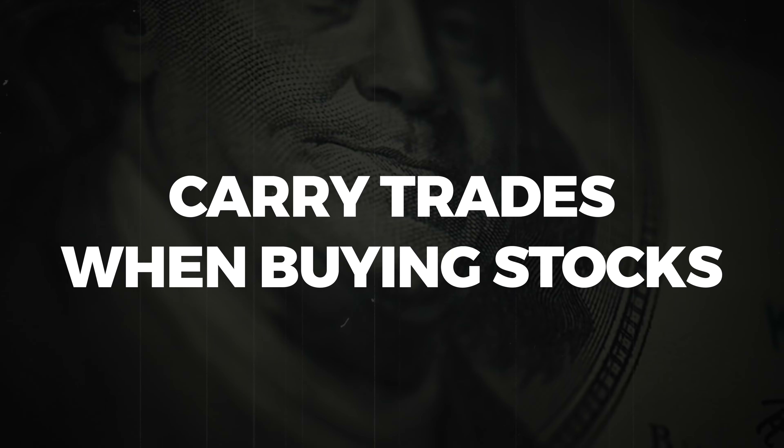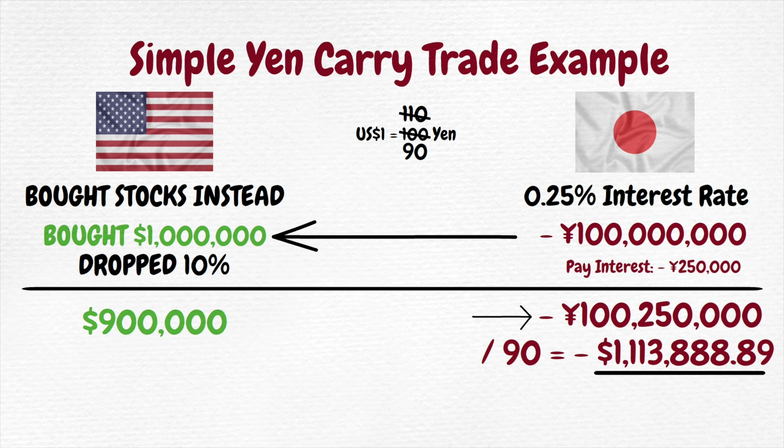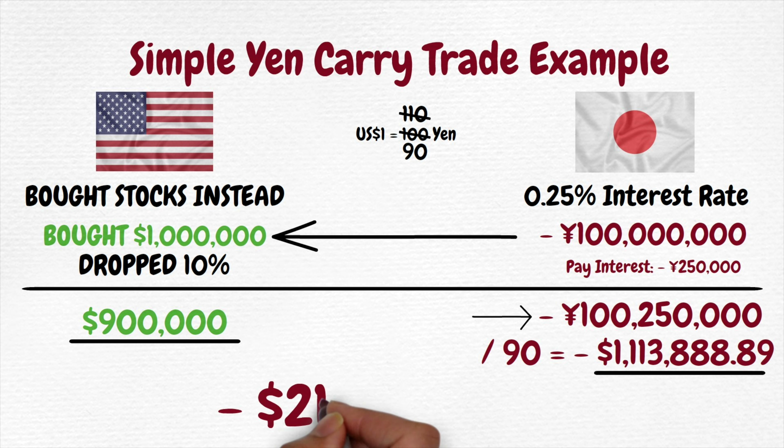In the real world, we do have to look at the non-carry portion of returns, which are quite unpredictable. So what would happen if we borrowed 100 million yen, converted it to 1 million US dollars, and used that to buy stocks — and then those stocks went down 10%, and the yen also increased in value? Does that remind you of a scenario that happened recently? Our 1 million dollars is now only worth $900,000 because those stocks went down 10%. And if we closed out our trade to pay off the 100,250,000 yen we owe, still assuming the yen appreciated to 90 yen to the dollar, we are now short $213,000 and change — a loss of over 20% on our original $1 million position. That is quite significant.